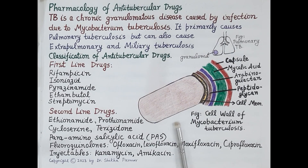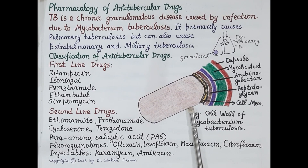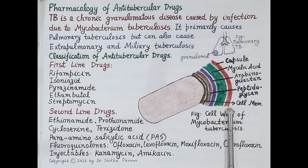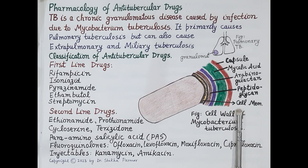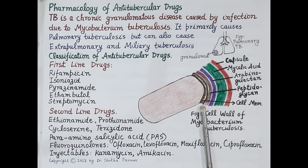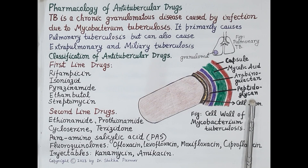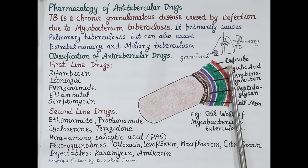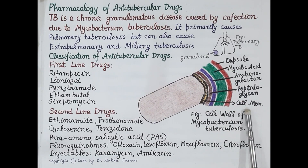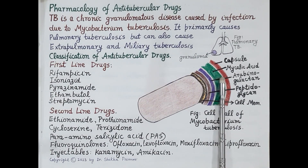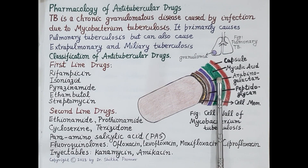Now look at this figure — it shows the structure of Mycobacterium tuberculosis. It is a rod-shaped bacteria with a highly complex cell wall made up of five main layers: innermost is the cell membrane, covered by the peptidoglycan layer, then the arabinogalactan layer, then mycolic acid, and finally the outermost capsule. The mycolic acid layer is the toughest; most antibiotics cannot pass through it. Thus TB requires long-term treatment and is treated by multi-drug therapy.